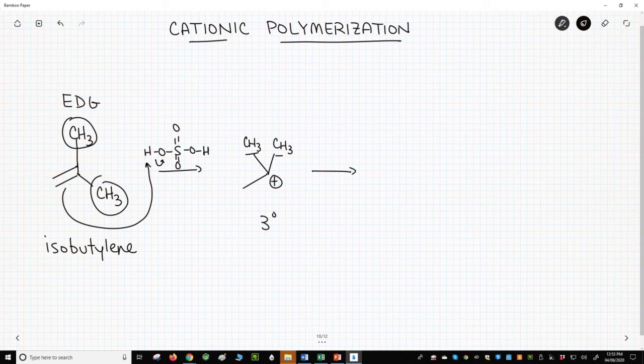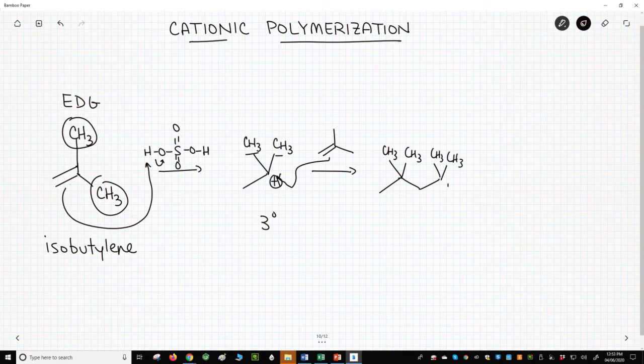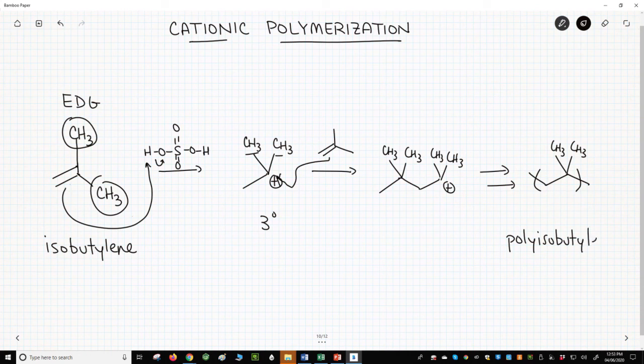The carbocation can then be attacked by another isobutylene monomer that gives us another new cation intermediate. This process continues until we eventually get a polymer, polyisobutylene.